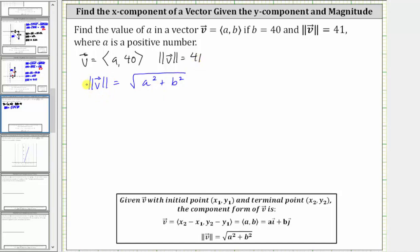The magnitude of vector v is 41, so we have 41 which is equal to the square root of a squared plus b squared, which in our case would be a squared plus 40 squared.